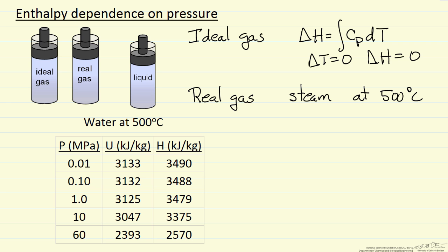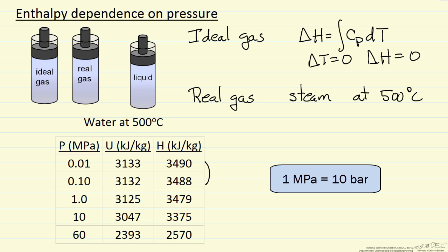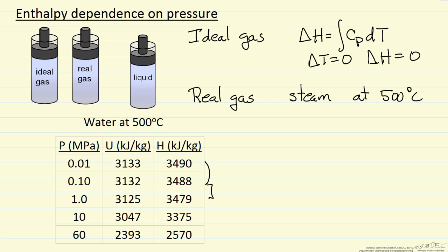You can see here that as we change the pressure, starting at low pressure — going from a tenth of a bar to one bar — almost no change. Even going to 10 bar, very small change in the enthalpy. At 100 bar, we see a significant change, but it's 100 kilojoules out of 3,500 kilojoules, so very small. When we get to very high pressures, now we see a significant change — the enthalpy decreased as we went to these very high pressures.